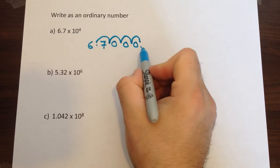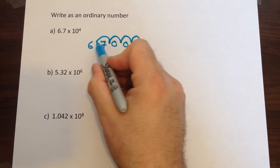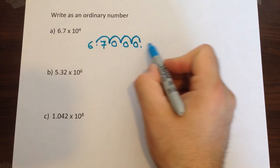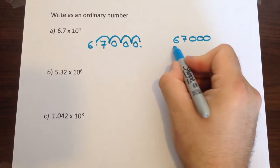Now we can't leave the answer like that because it would have two decimal points and that wouldn't make sense. So we rewrite it without that one there because it's actually moved to the end. So the correct answer is 67,000.